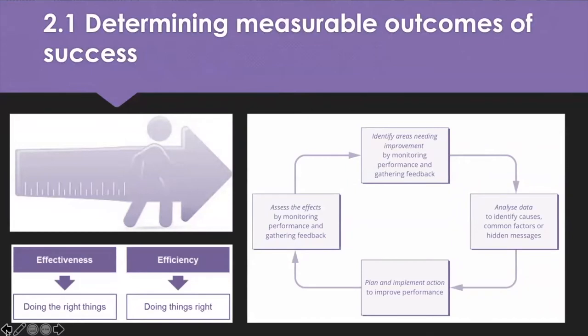Determining measurable outcomes for success: outcome measurement is a systematic way to assess the extent to which a program has achieved its intended results. Measuring outcomes in supply chain means assessing the extent to which processes have achieved goals of timeliness, reduced waste, etc. Metrics should represent results of goals, not just activities and inputs, show progress towards the intended purpose, and demonstrate notable value increase in terms of cost reduction, quality, efficiency and effectiveness.